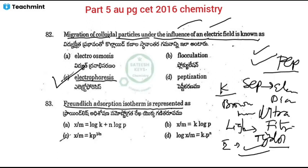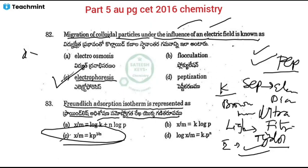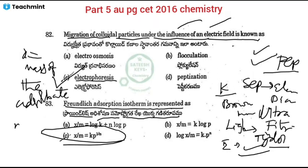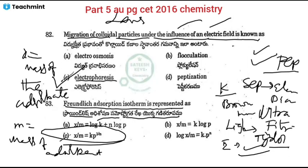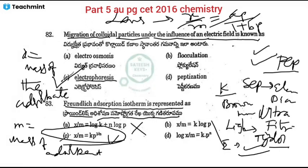Next question: which absorption isotherm is represented as x/m = k × p^(1/n)? Here x is the mass of the absorbate and m is the mass of the absorbent. This is the Freundlich isotherm. The Langmuir equation is x/m = aP/(1 + bP), where a and b are absorption coefficients, applicable to monolayer adsorption. Option C — Freundlich isotherm — is the correct answer.